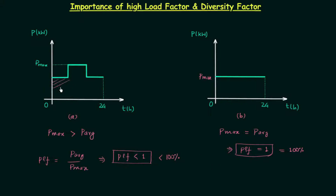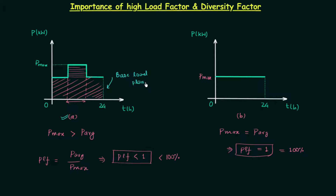In load curve A, there is a base load — a power demand that is always present — and also a peak load with a corresponding peak load duration. So load curve A has two types of loads: base load and peak load. Because of this, to satisfy load curve A we need two types of plants: base load plants, which are operational throughout 24 hours, and peak load plants, which operate only during the peak load period.